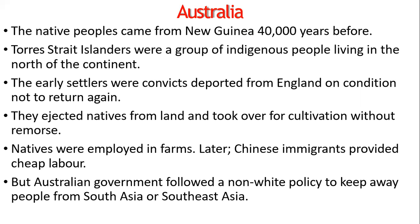Canberra is a native word meaning 'a meeting place.' Some natives were employed in the farms under conditions of work so harsh that it was little different from slavery. Later, Chinese immigrants provided cheap labor, just as in California. But unease about being dependent on non-whites led governments in both countries to ban Chinese immigrants. Such was the popular fear that dark people from South Asia or Southeast Asia might migrate to Australia in large numbers that there was a government policy to keep non-white people out.